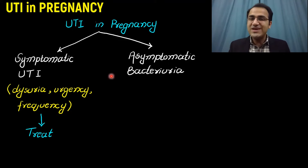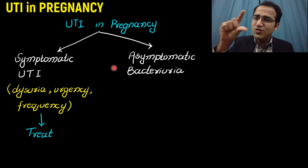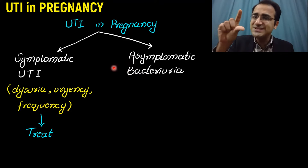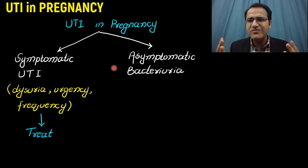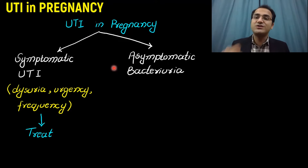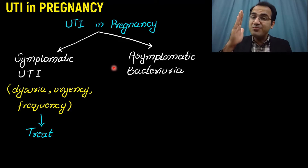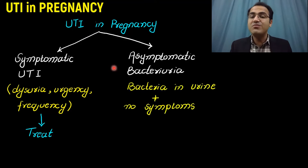If the patient is having asymptomatic UTI, that is the one in which you detect the presence of bacteria in the urinalysis sample but the patient is not having any symptoms of UTI — no dysuria, urgency, or frequency — but there are bacteria present in the urine. In normal individuals we do not treat that, but in pregnancy that must be treated. Asymptomatic bacteriuria must be treated in pregnancy.